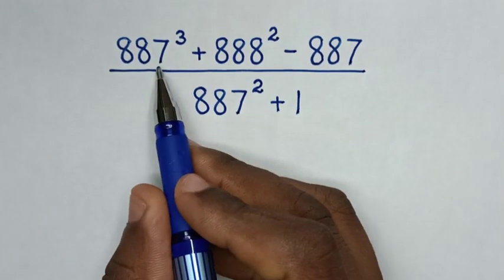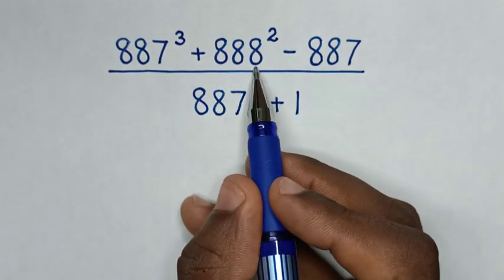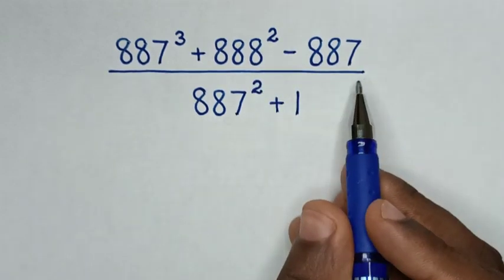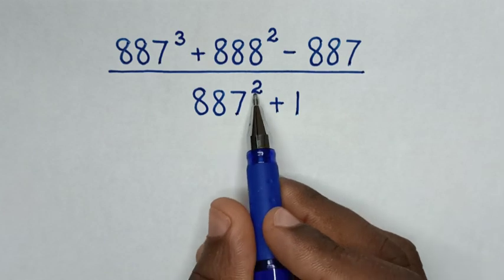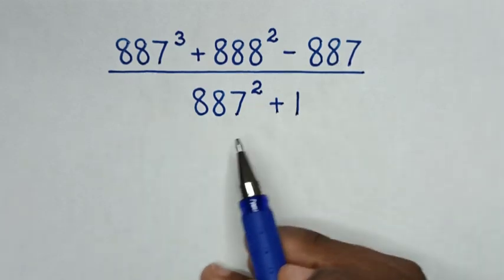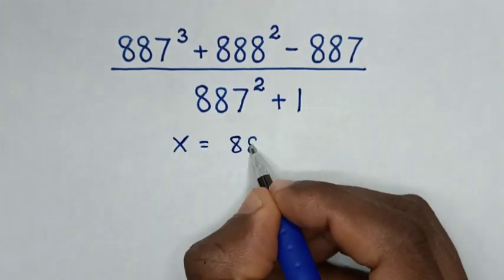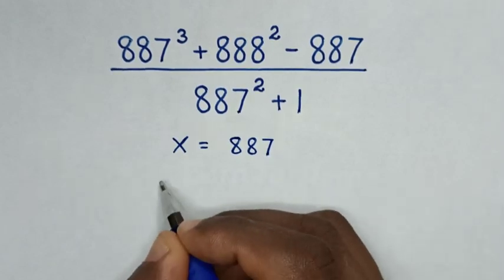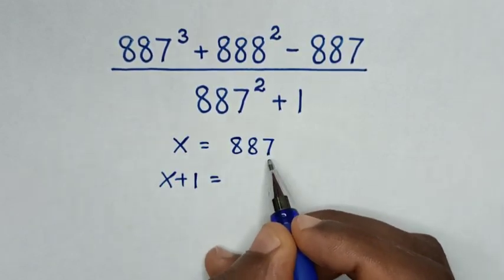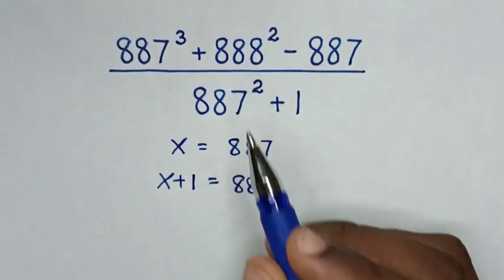Hello. We need to find the value of 887 cubed plus 888 squared minus 887, over 887 squared plus 1. From here, 887 is common, so we let x equal to 887. Then x plus 1 equals 887 plus 1, which is 888.